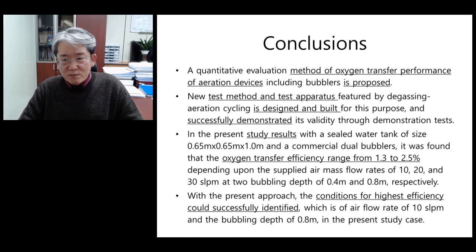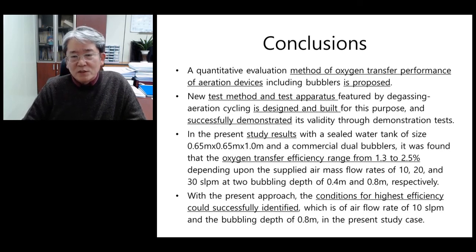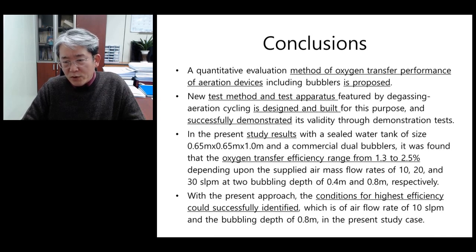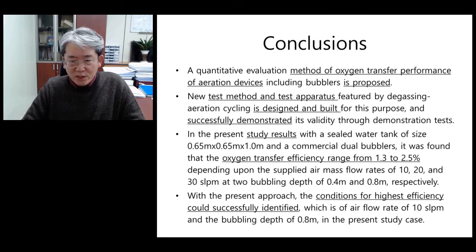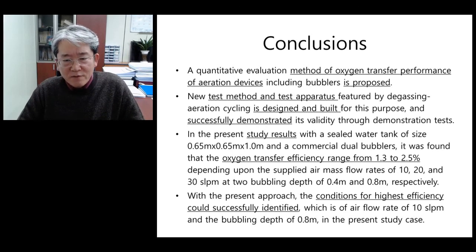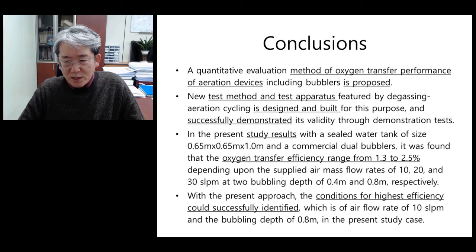A sealed water tank was designed and built for this purpose and successfully demonstrated its validity through demonstration tests. With a sealed water tank of size 0.65 m by 1 m and a commercial dual bubbler, it was found that the oxygen transfer efficiency ranged from 1.3 to 2.5 percent, depending upon the supplied air mass flow rates of 10, 20, and 30 sLPM at two bubbling depths of 0.4 m and 0.8 m, respectively. With the present approach, the conditions for highest efficiency could be successfully identified, which is an air flow rate of 10 sLPM and a bubbling depth of 0.8 m in the present study case.